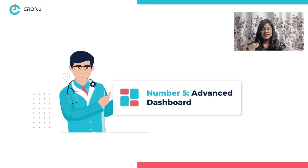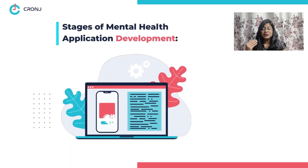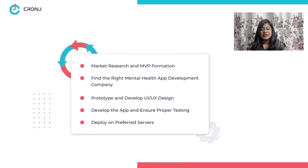Doctors can generate reports, adjust therapy, and more right from their smartphones. Number six: treatment plans — doctors and caregivers must be able to clearly outline their treatment plans along with their rates for effective reach and better knowledge. Now let's jump into the stages of developing a mental health application. Stage one: conduct thorough research and a market survey of competitors to understand market demands, features, and drawbacks, and form a minimal viable product.